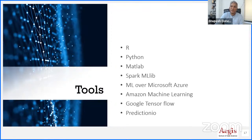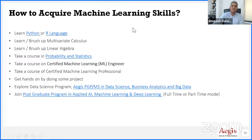R was quite popular till 2016, but from 2016-17 onward Python surpassed it, and now Python has emerged as the king of machine learning and data science. To acquire these skills, learn Python or R. To be good at machine learning, you need to be good at calculus, linear algebra, and understand derivatives — essential components of optimization algorithms.